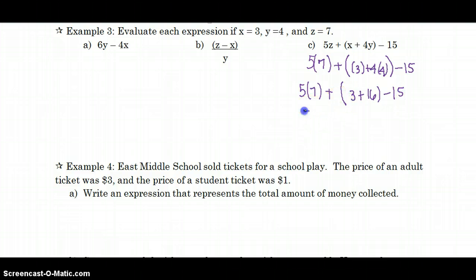So 3 is going to hang out while I say 4 times 4 is 16. Now I'm ready to take care of my parentheses because that's the order of operation. 3 and 16 is 19. Now, moving from left to right, I take care of multiplication. We get 35 plus 19 minus 15.